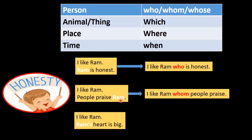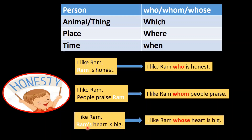Third example: I like Ram. Ram's heart is big. In this example we have Ram in the beginning but with apostrophe s — that's what we call possessive. So if the subject appears in possessive form, we use the relative pronoun whose. For easier understanding, you can remember apostrophe s, or possessive pronouns like mine, his, her, their, ours — as the possessive form which takes the relative pronoun whose.